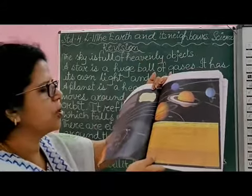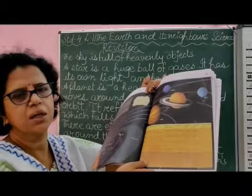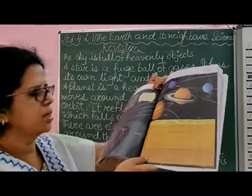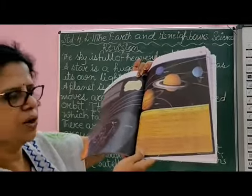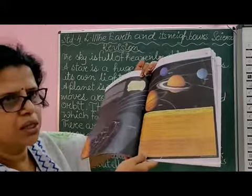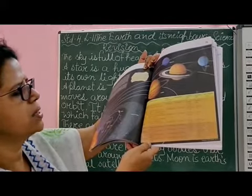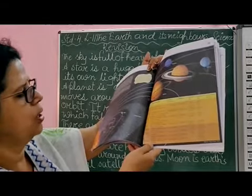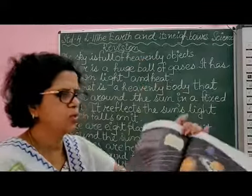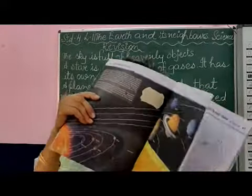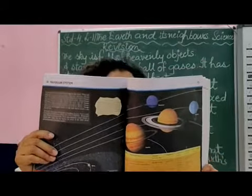Mars is called the red planet because of its color. Jupiter is the largest planet, known for its red spots. Saturn has a ring and is also a large planet. Uranus is the lightest among the outer planets, and Neptune is the coldest among them because it is the farthest.